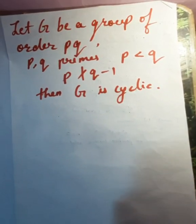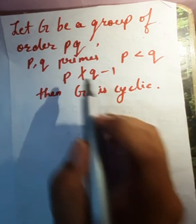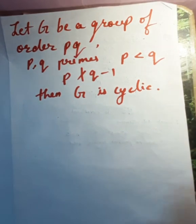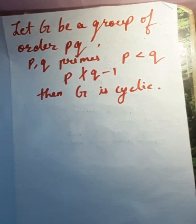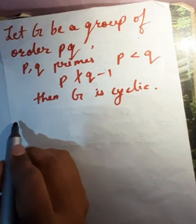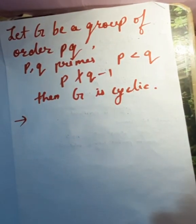In this problem, we are given a group of order pq where p and q are primes, p less than q, and p does not divide q minus 1. We need to show that the group is cyclic. This is an easy application of Sylow's theorem.